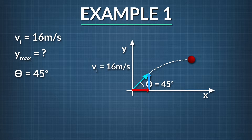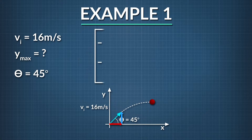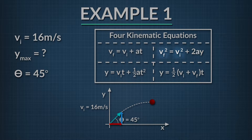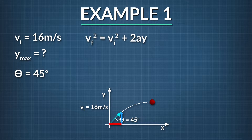Let's think about what kinematic equation we can start with that fits the variables we're given. We are solving for a variable in the y-direction. Gravity is the only force acting on the ball and is causing it to accelerate and decelerate in this direction. We can use one of our four kinematic equations to help us solve. The second equation has an initial and final velocity, a constant acceleration, and a vertical displacement, y. Since we want to solve for the maximum height, we know that the ball's vertical velocity at that point is zero — that's the final velocity. The ball's height is a vertical displacement from the ground, so this equation will let us solve for the maximum height of the ball.